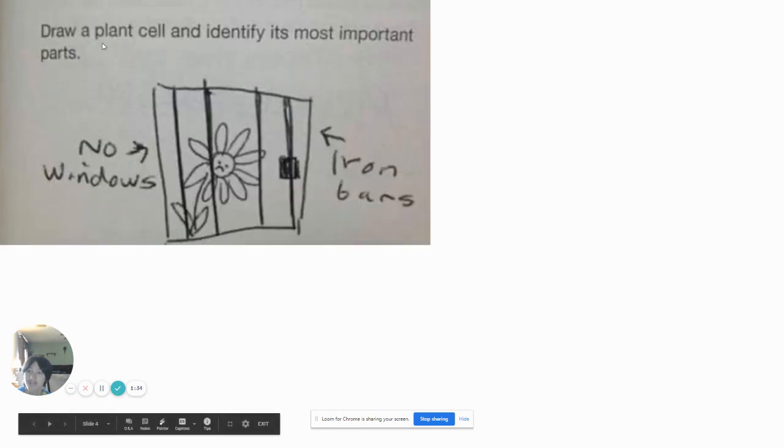Draw a plant and identify its most important parts. It has no windows and no iron bars. So technically, it's in prison. You know, because plants can't move. They don't have bones, like us humans. So that's why they can't move. And also, plants can make their own food with the sunlight. Unlike us humans, where we have to hunt and cook our food. And grow our food. Plants can do it themselves.